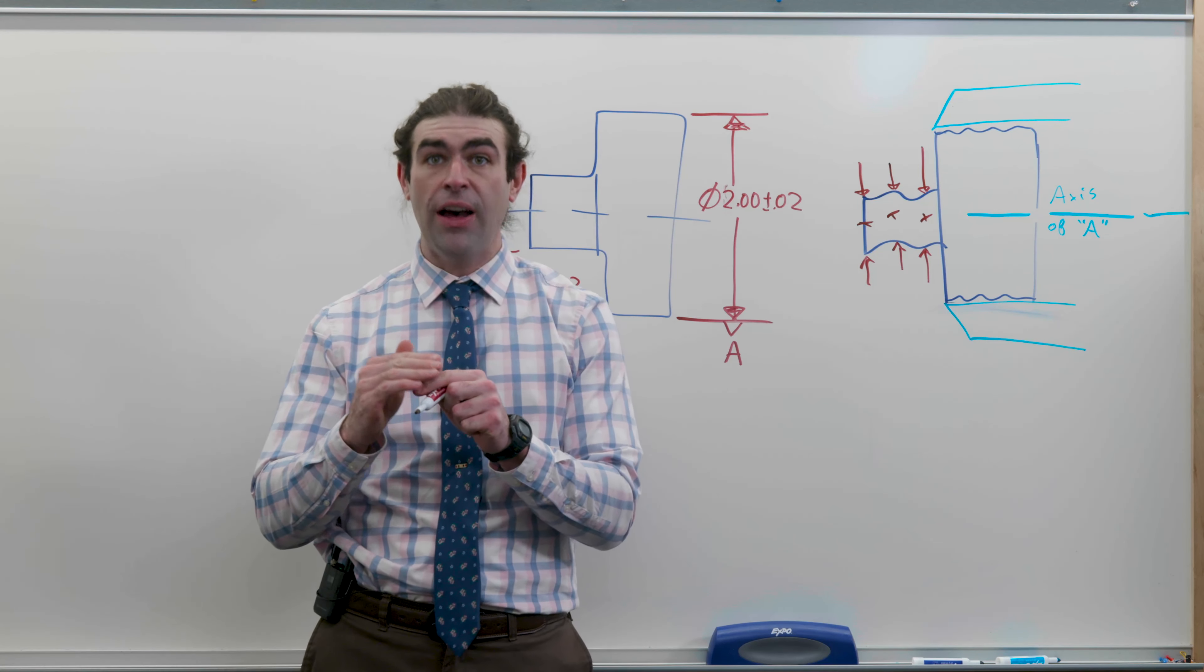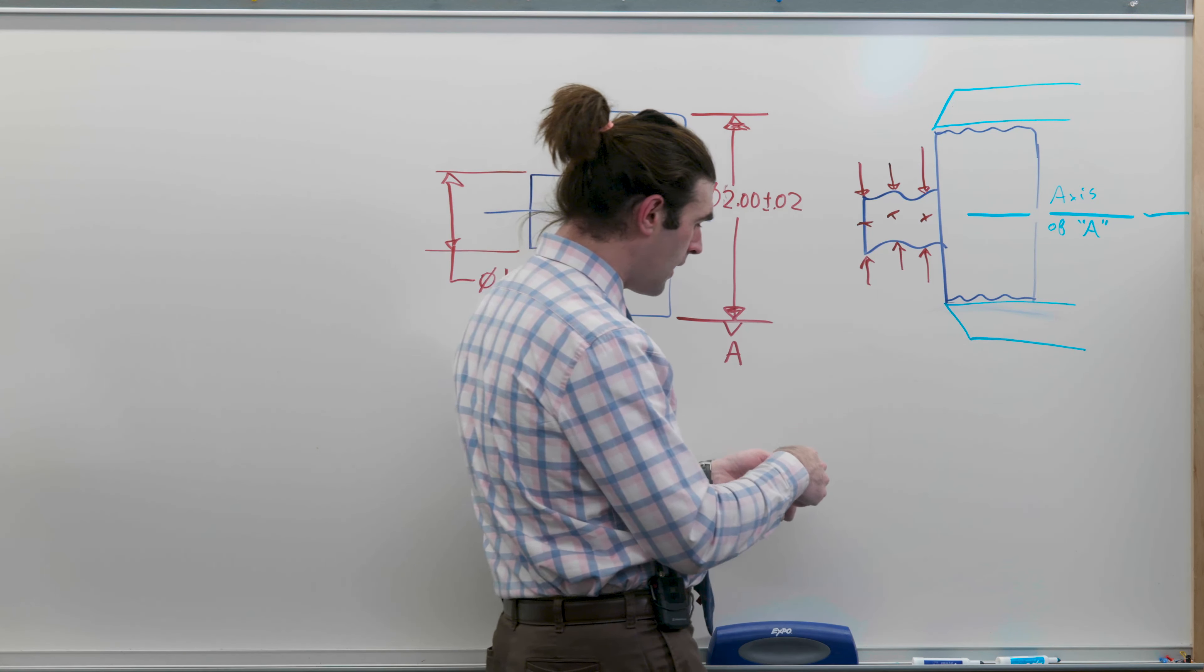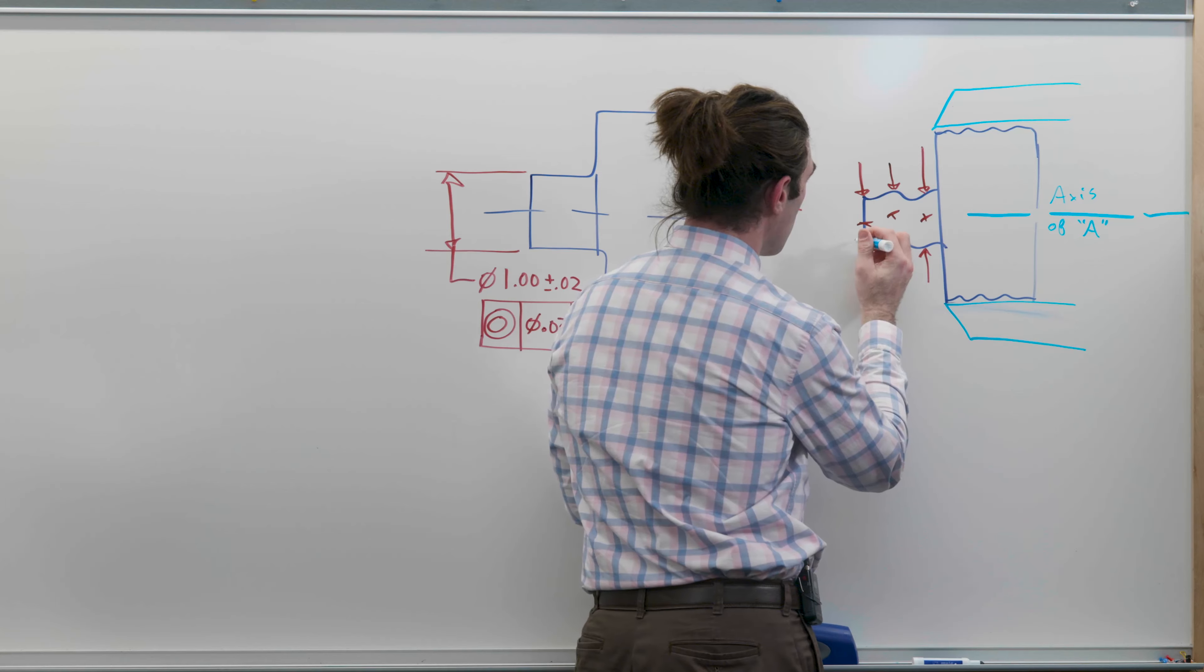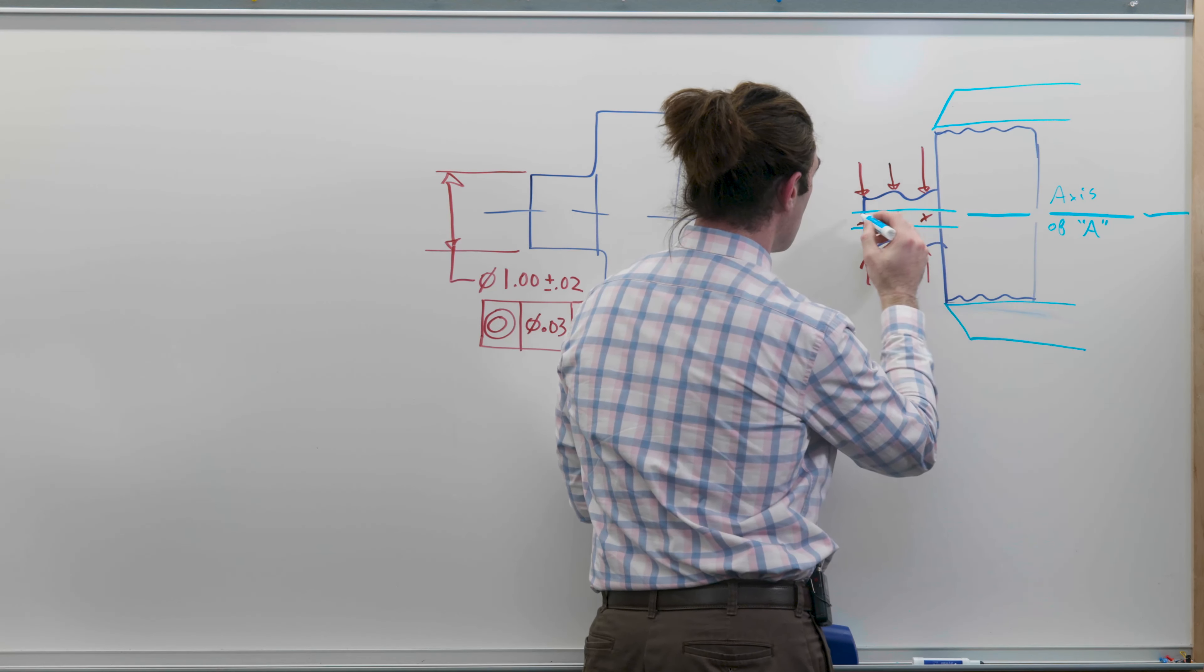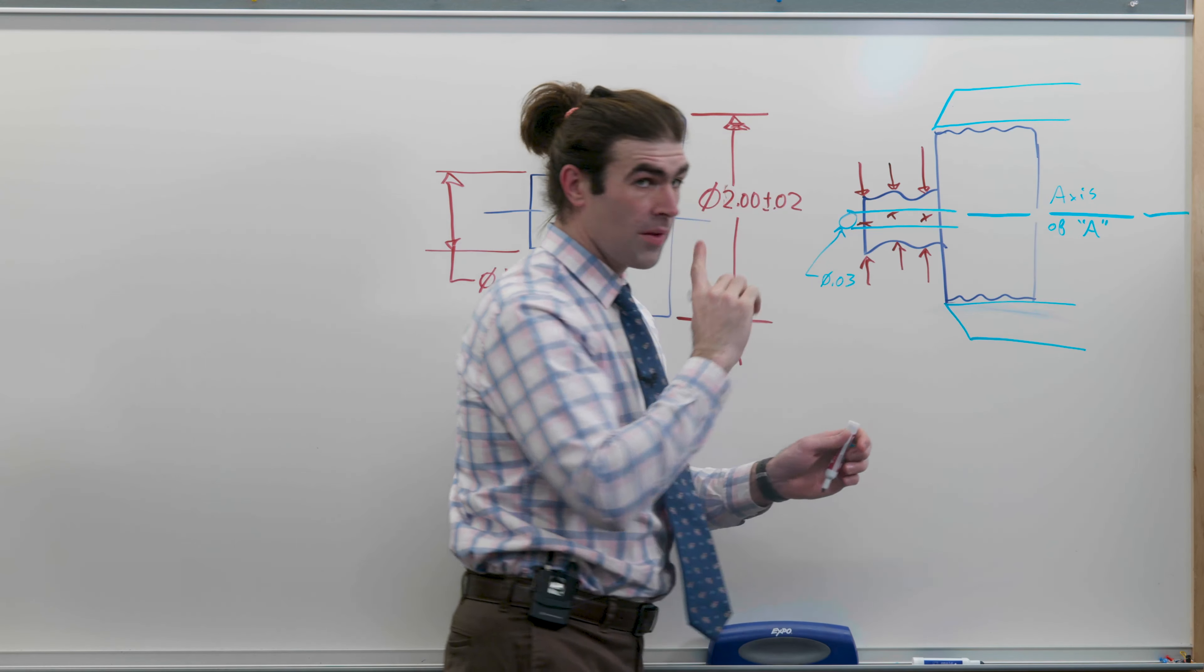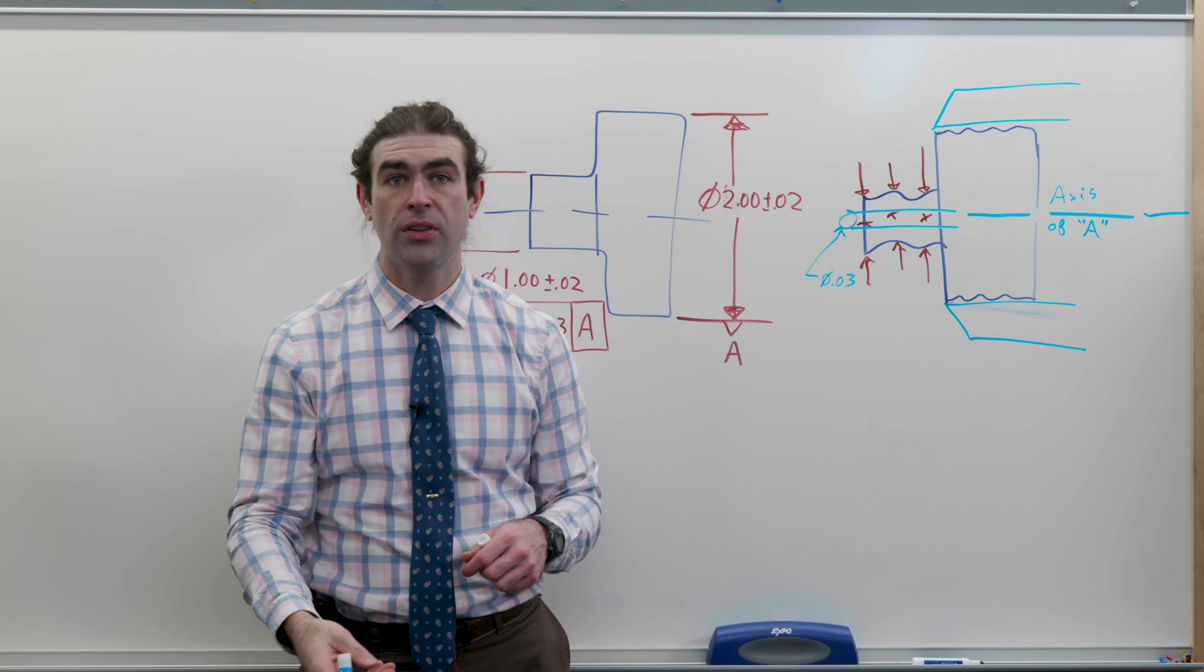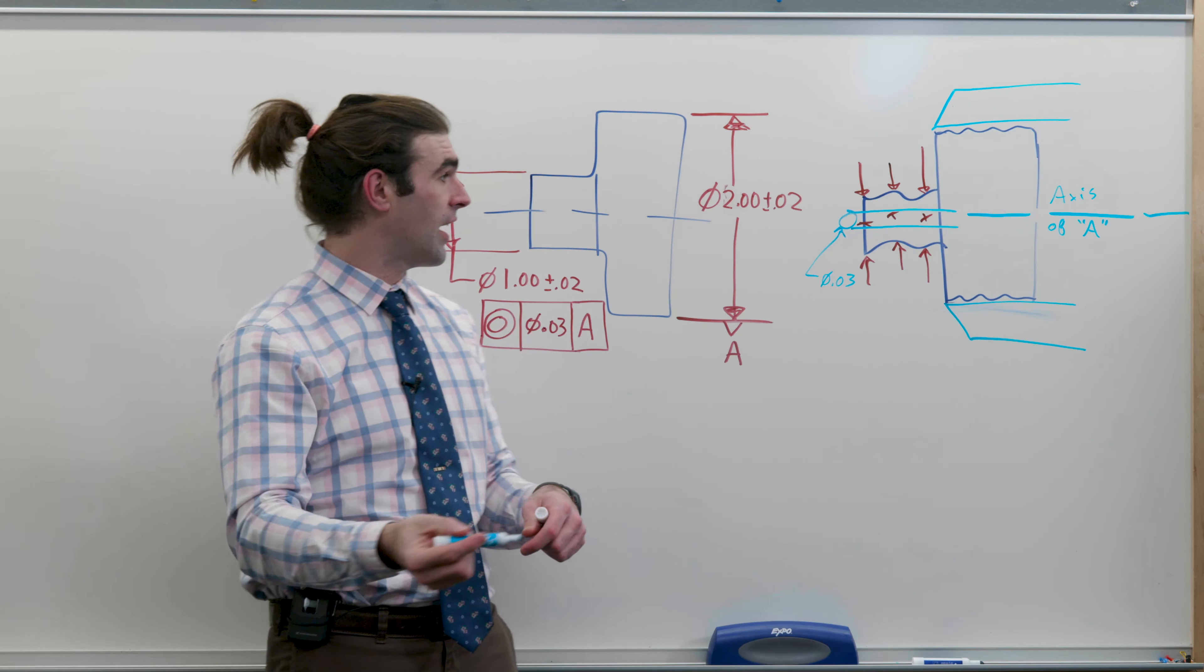You would end up with a bunch of points and the locations of the points relative to this axis. Are they five thousandths away from the axis or one thousandth, whatever it is. Then we figure out if those points are inside or outside of the concentricity tolerance zone.